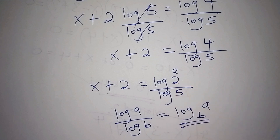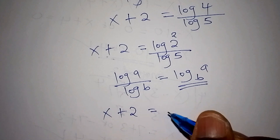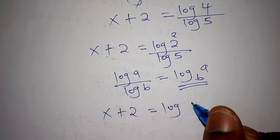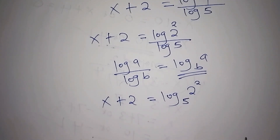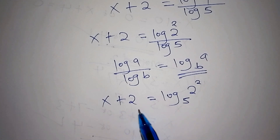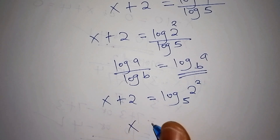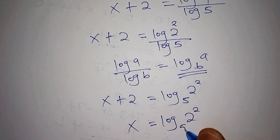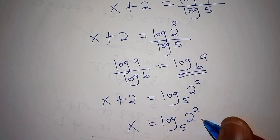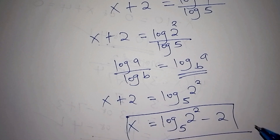We shall apply this change-of-base formula, giving us x plus 2 is equals to log of 2 to the power of 2 to base 5. Now we want to remain with x only, so we move the 2 to the other side. Our x shall be log of 2 to the power of 2 to base 5, minus 2. These are our values for x.